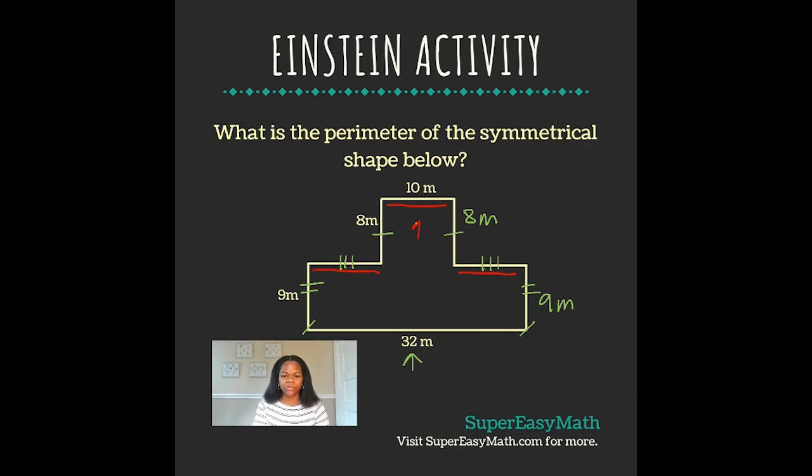They told me that this one is 10, so I can take 32, subtract 10, and I get 22. So this looks like it's divided in half perfectly, and because it's symmetrical we know that it is. So that means that 22 is divided in half, and both of these flat portions total 11 meters.